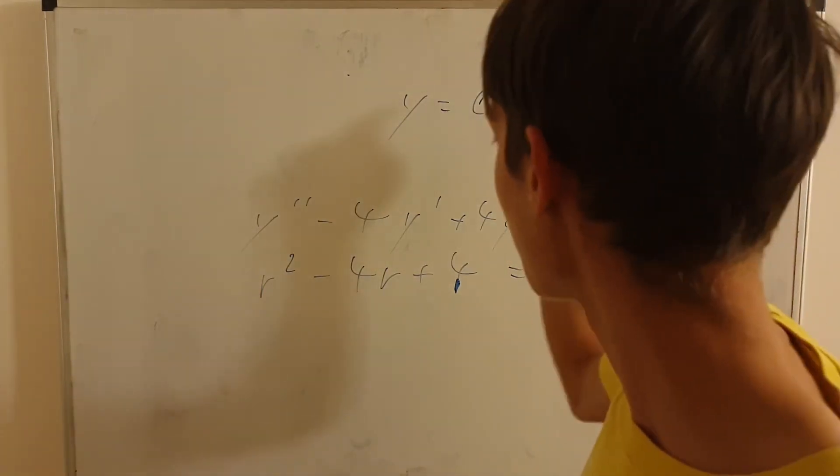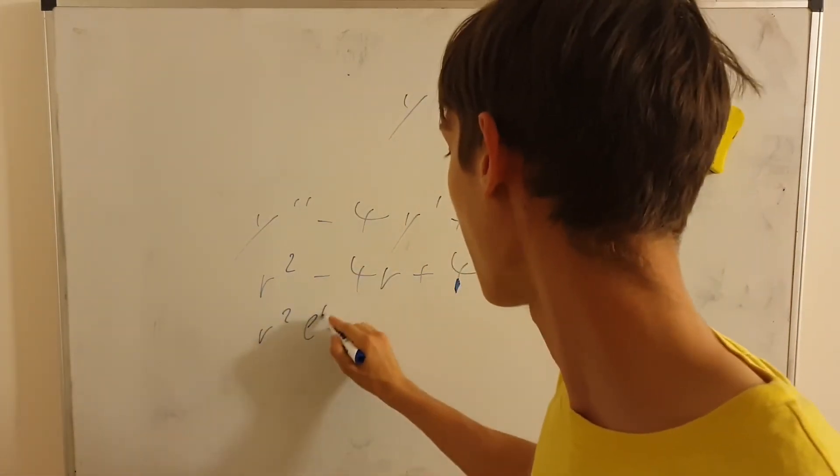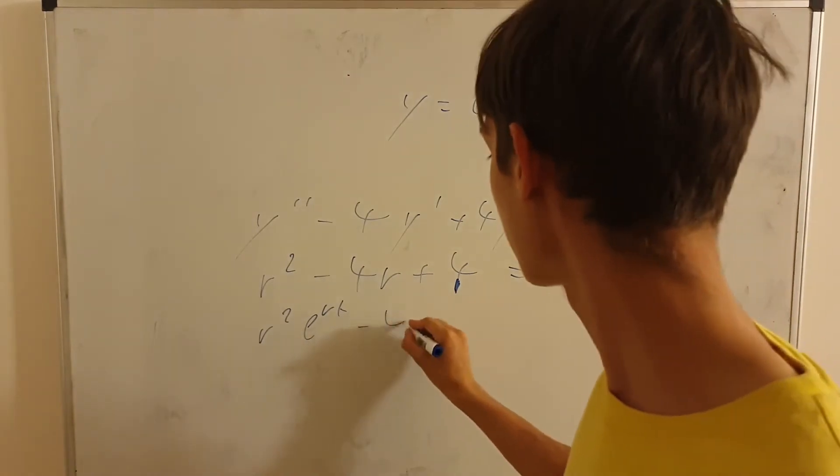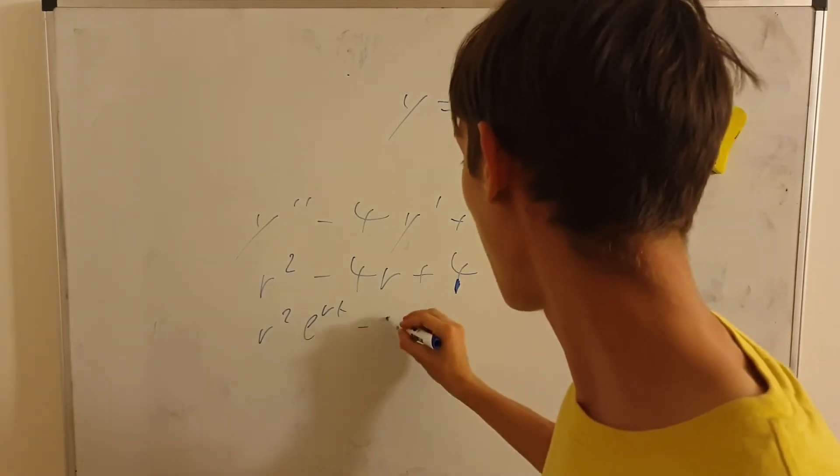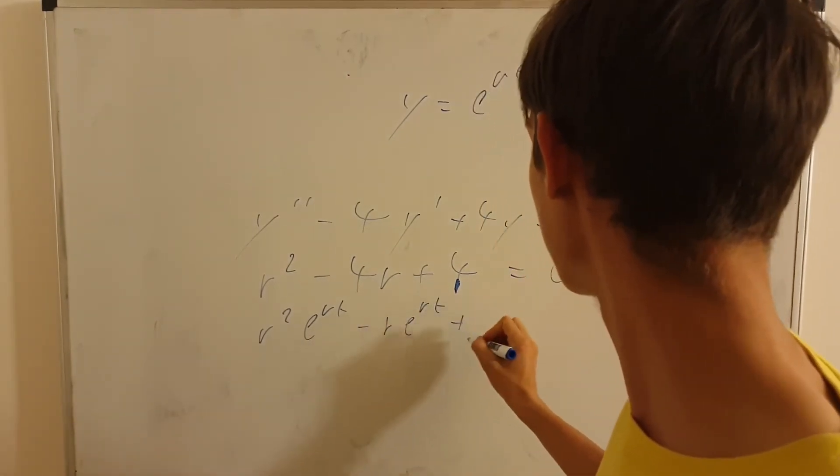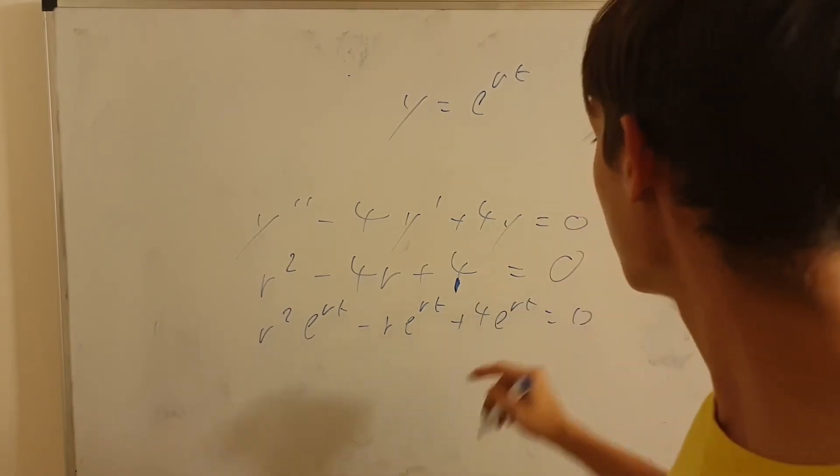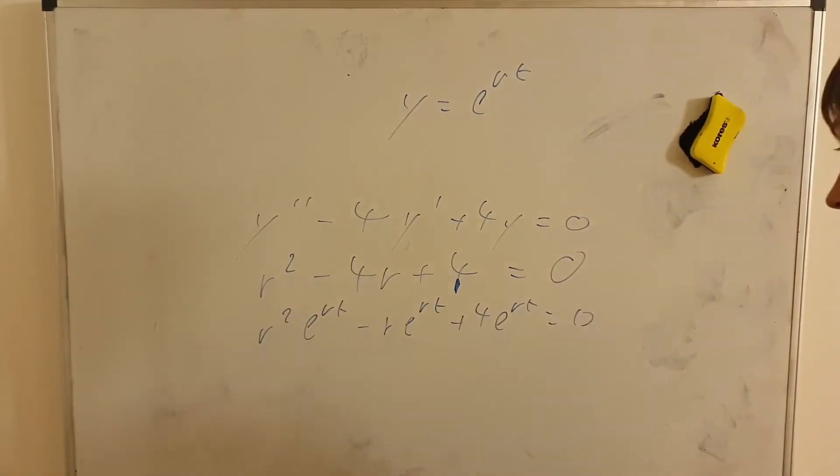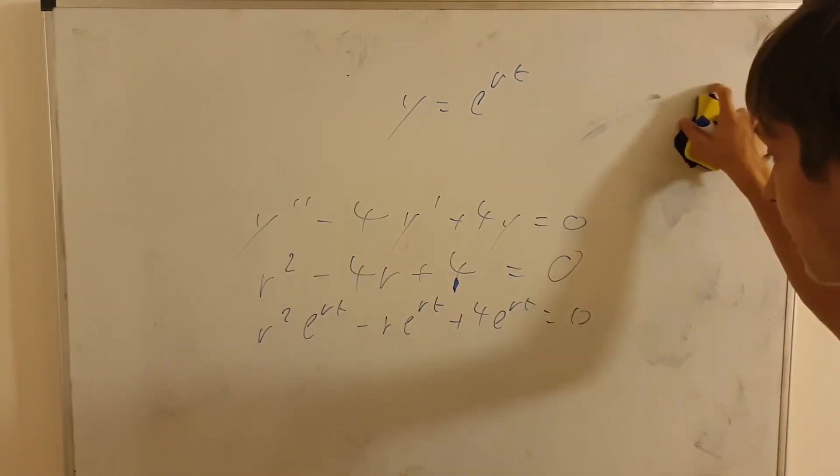So if you double derivate this, you get r squared e^(rt), if you single derivate this, you get r e^(rt), and this is 4 e^(rt), and then if you divide both sides by e^(rt), you get exactly this quadratic equation.